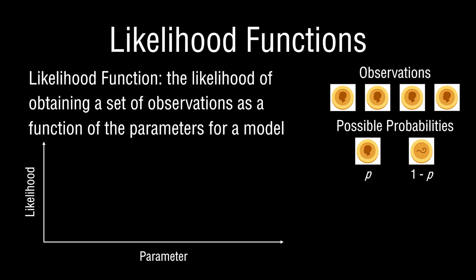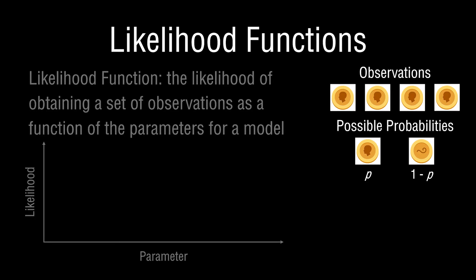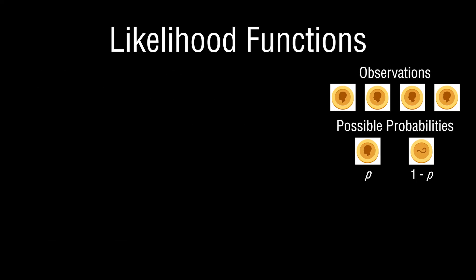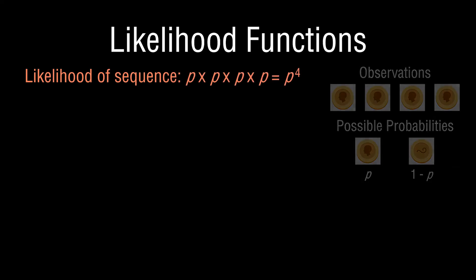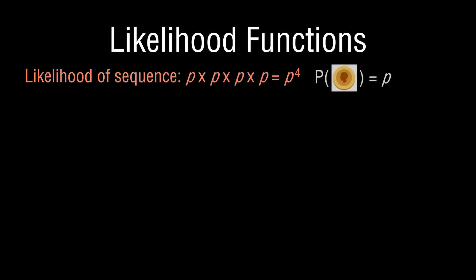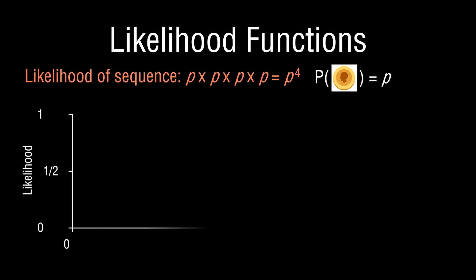When p equals one half, we said there's a one in sixteen chance of this occurring — based on the assumptions of independence and identically distributed observations. We can generalize the way we came up with that answer and say the likelihood of this sequence is p to the fourth, where p is the probability of heads. Now let's create that likelihood function plot, where we plot the likelihood of this sequence as a function of the parameter p.